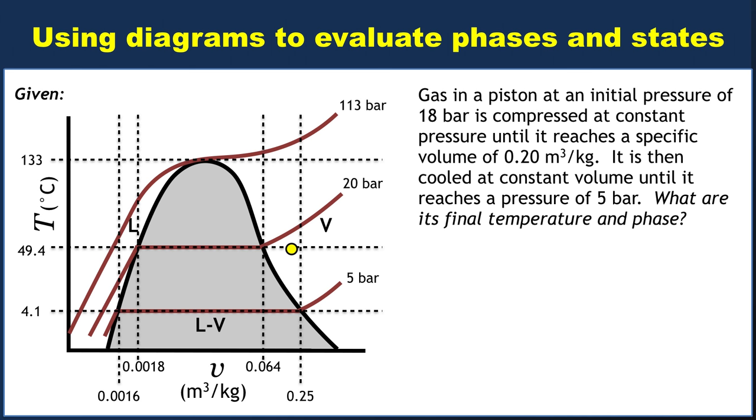So we should be moving vertically downward until we hit a pressure of 5 bar. Well how do we know where to stop? Fortunately we have an isobar corresponding to the pressure value of 5 bar, so we'll move straight down until we hit that isobar. Moving down, and we're crossing into the vapor dome, and now we hit that isobar corresponding to a pressure of 5 bar. Now we have enough information to answer what are the final temperature and phase of this system.